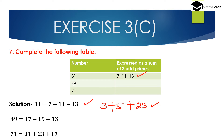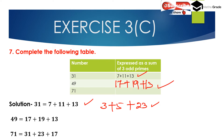For 49: 49 is the sum of 17 + 19 + 13. All three numbers — 17, 19, and 13 — are prime numbers. Alternatively, 49 = 3 + 5 + 41. The numbers 3, 5, and 41 are all prime numbers.